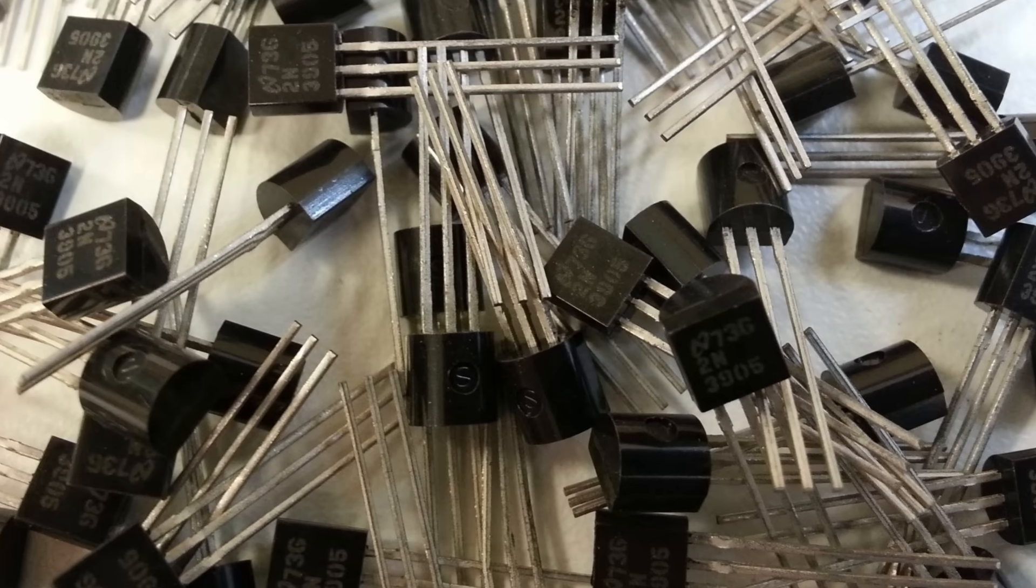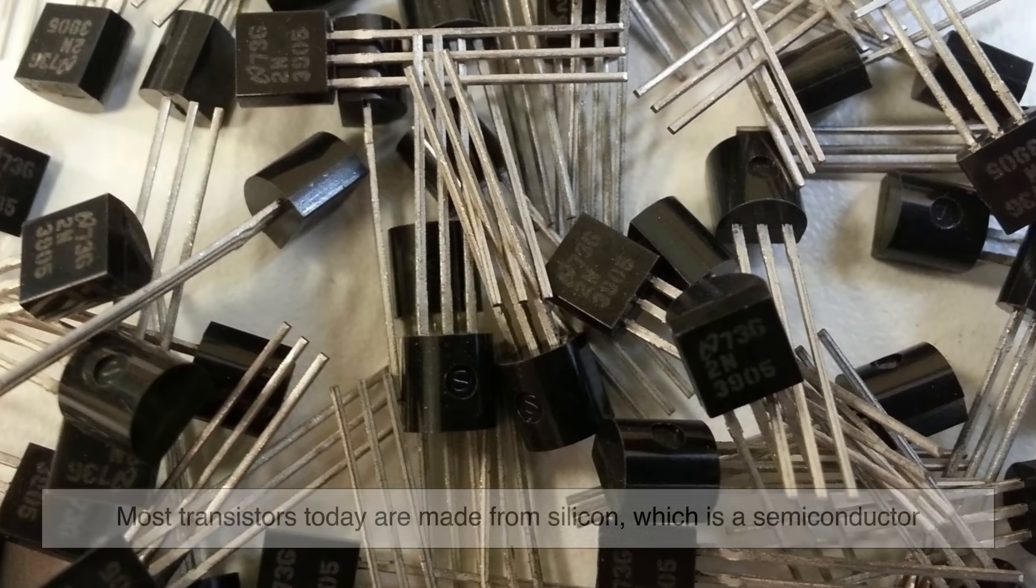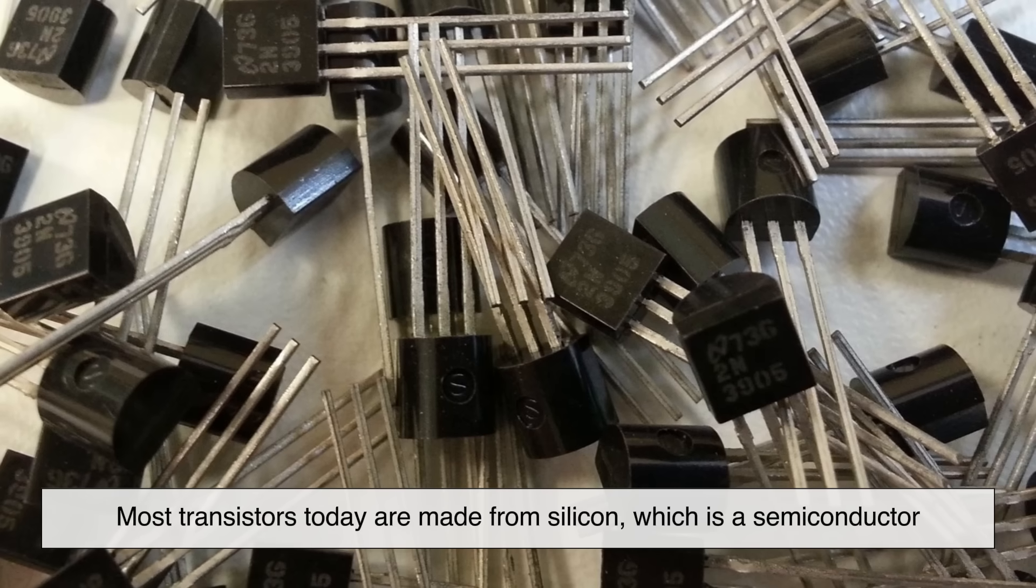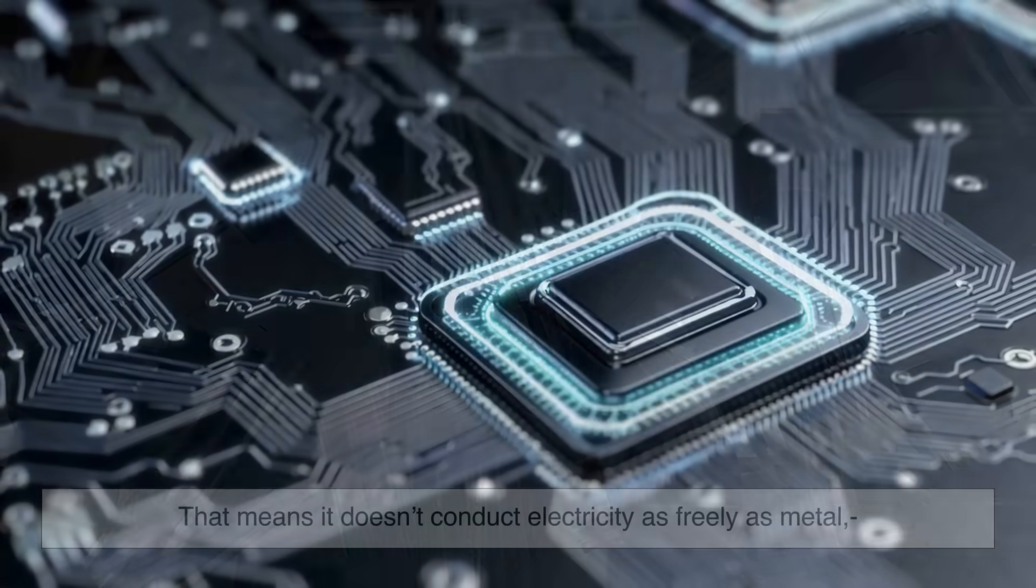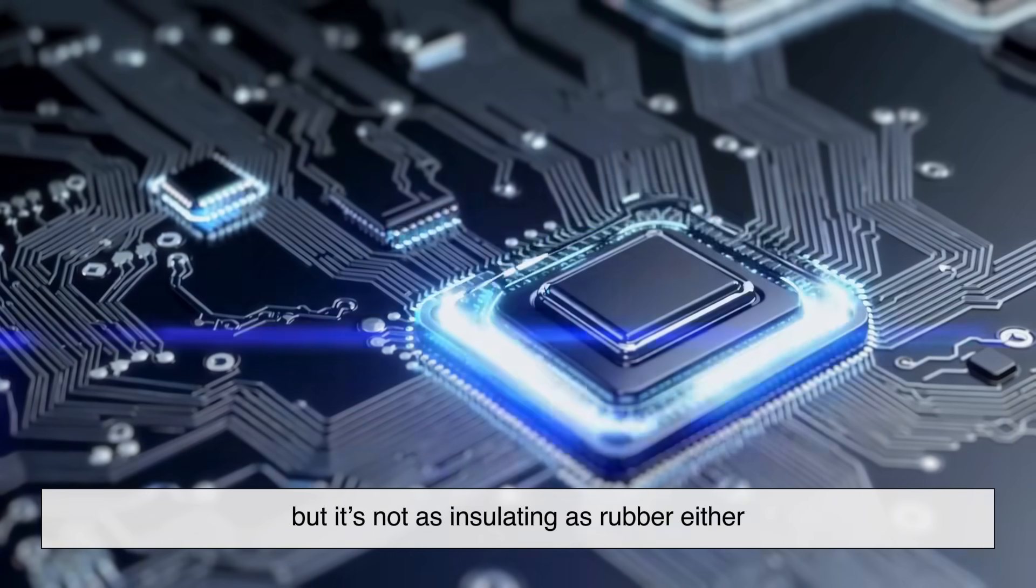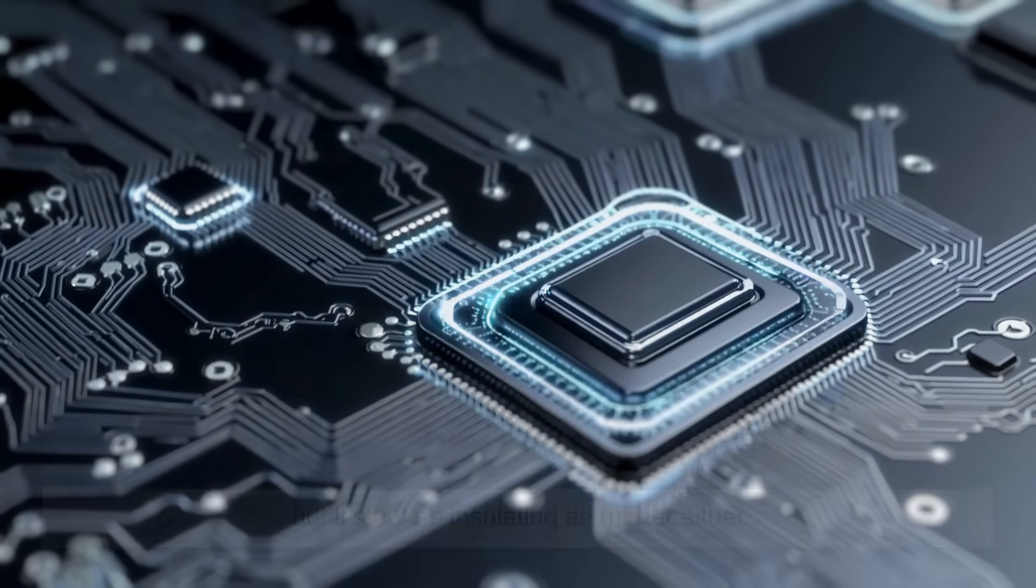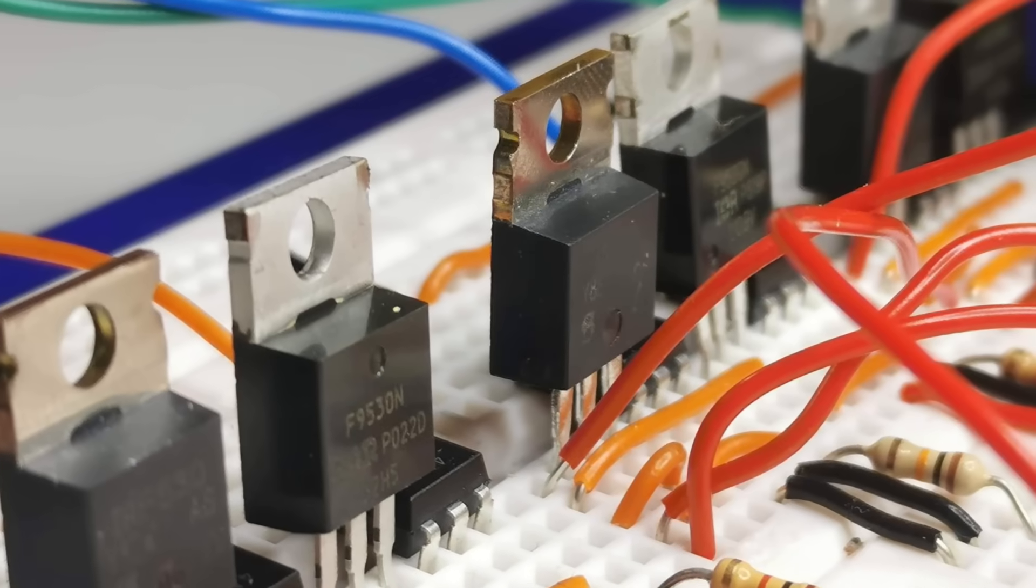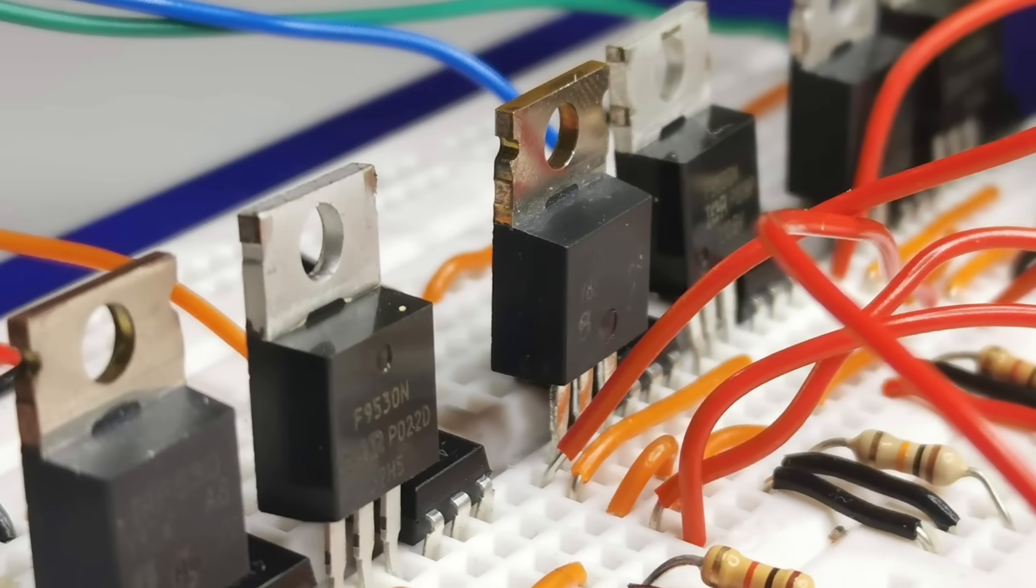Now, how does this little switch actually work? Most transistors today are made from silicon, which is a semiconductor. That means it doesn't conduct electricity as freely as metal, but it's not as insulating as rubber either. This in-between behavior is what makes silicon perfect for controlling current.